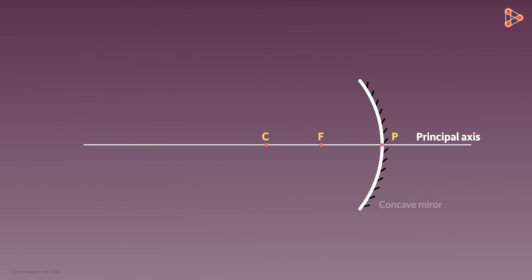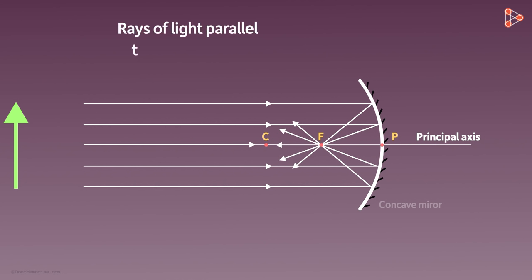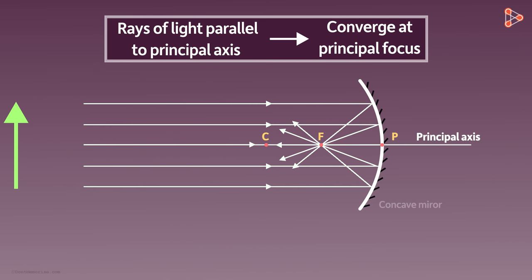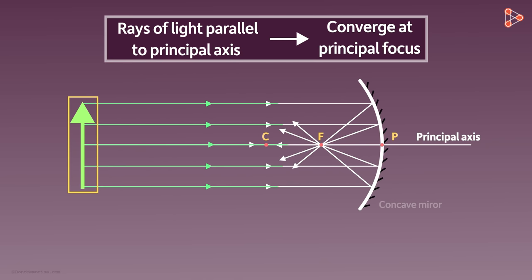Similarly, instead of the sun, we can take any other object kept at infinity, and the rays of light from that object incident on the mirror will be parallel to each other. If the rays of light are parallel to each other as well as to the principal axis, they will always converge at the principal focus. This does not depend on the position of the object — no matter where the object is on the principal axis, as long as the incident rays are parallel to each other and to the principal axis, they will always converge at the principal focus.